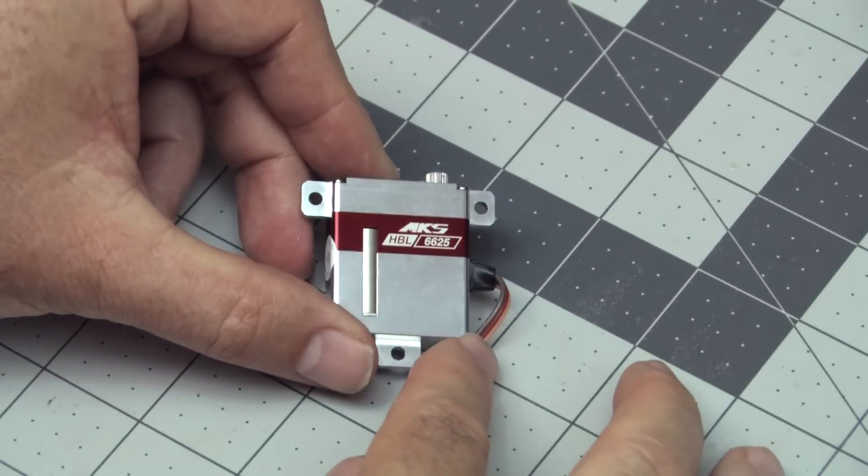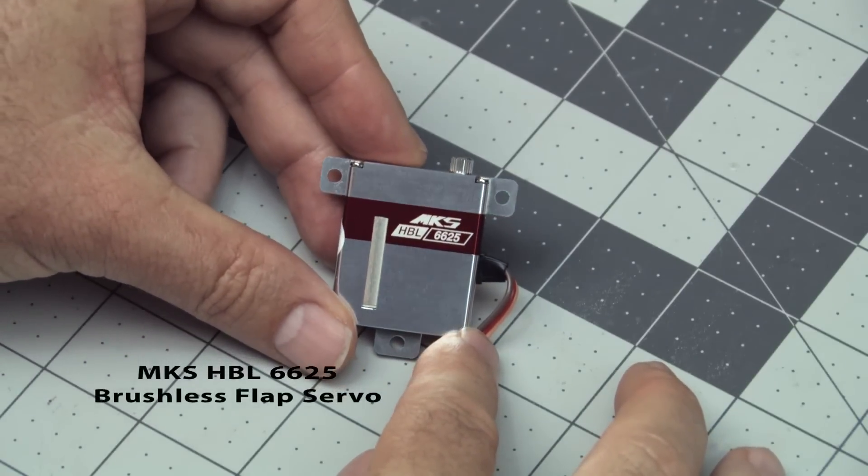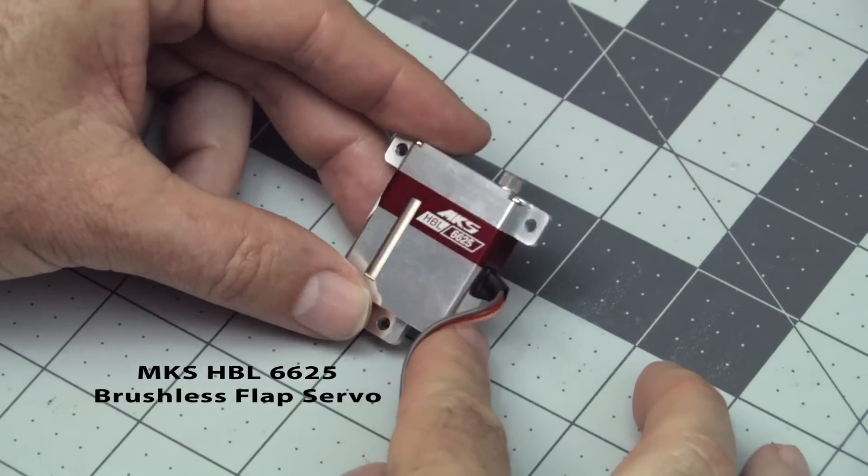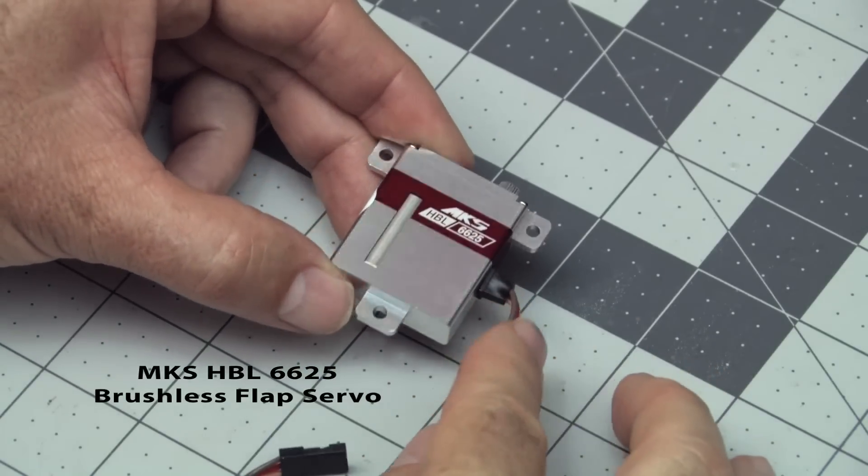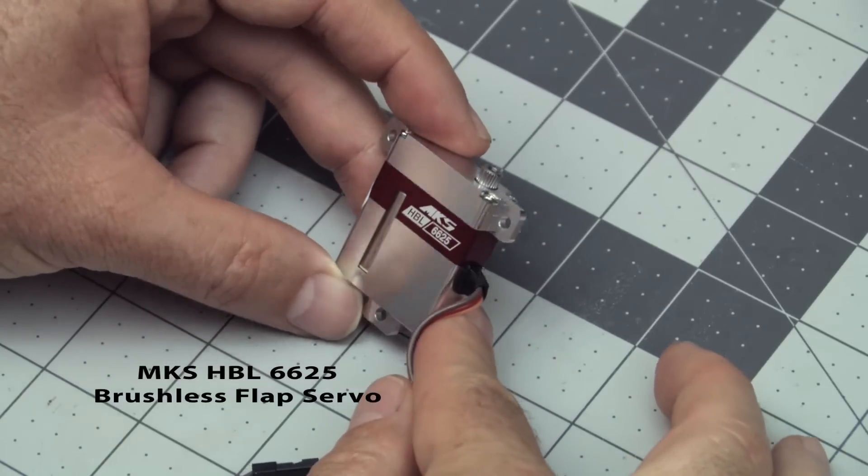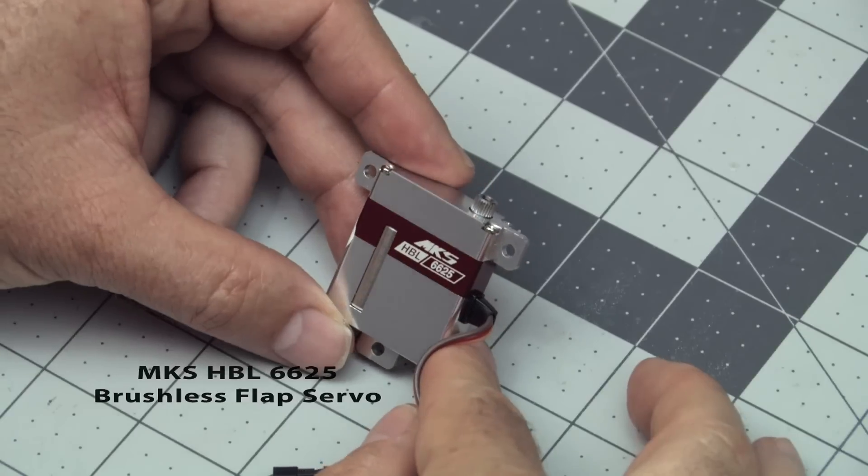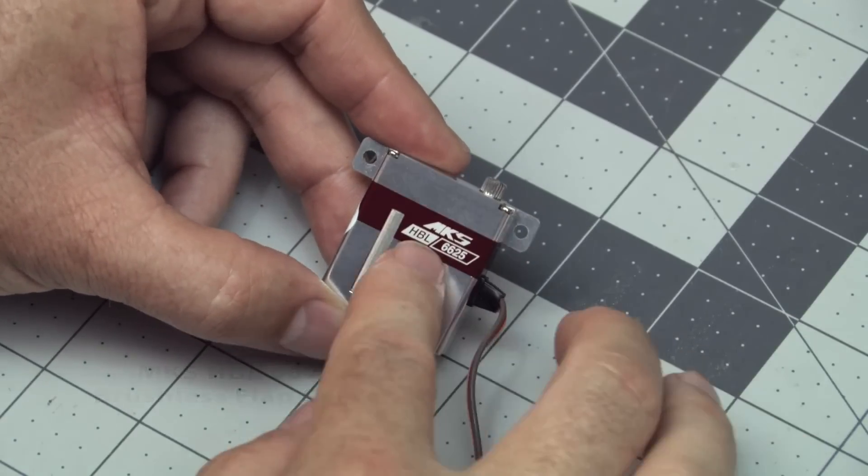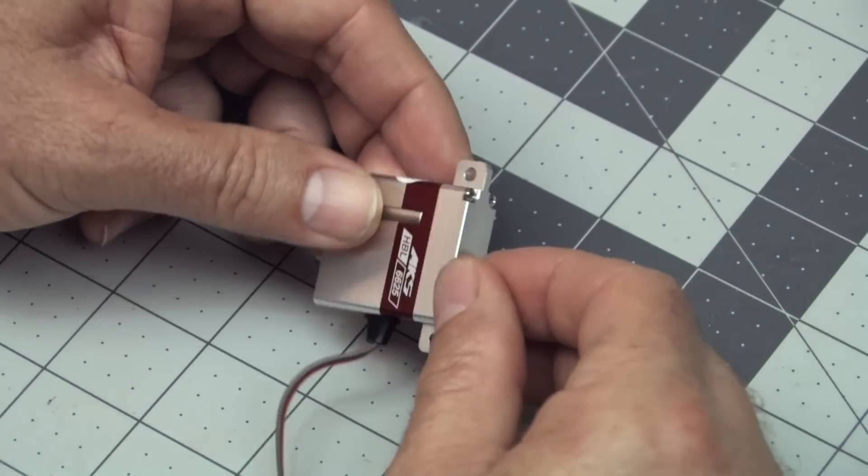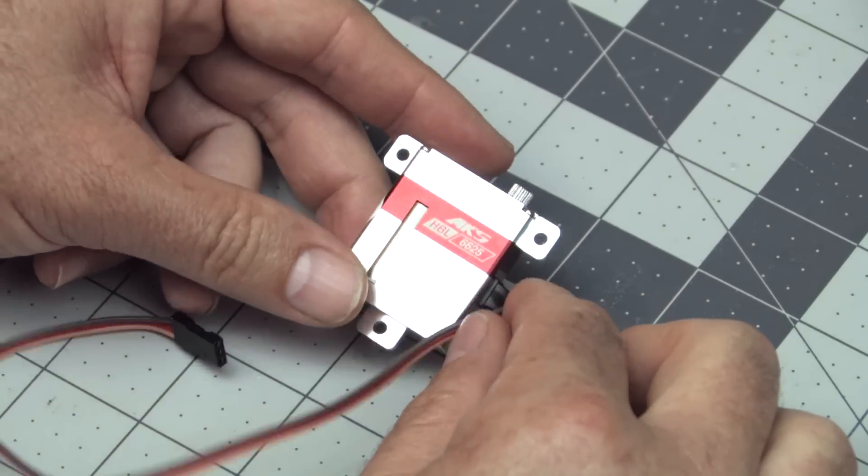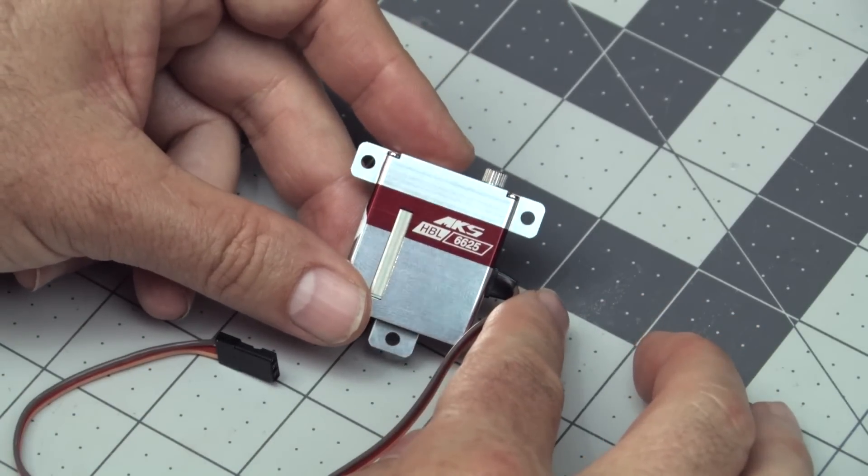And for the flaps, we're using something pretty exciting. This is the new MKS 6625. This is a brushless motor servo. This is the first brushless servo I've put in a plane. Very, very strong. Tons of torque. In fact, I got a warning that you can tear the horns out of the flaps if you're not careful. So you got to make sure your linkages are set up right for these. They have so much torque. Absolutely rock solid, no play at all. And these are going to be an excellent choice for the flaps.